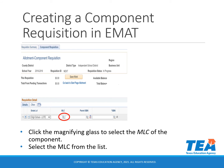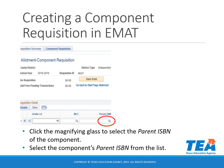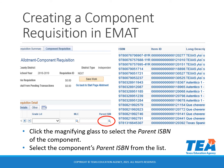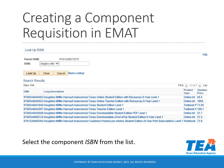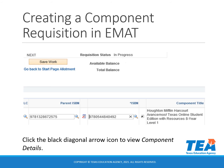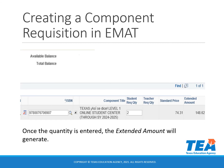Click the magnifying glass to select the MLC of the component. Select the MLC from the list. Click the magnifying glass to select the parent ISBN of the component — this is the program that contains the component you want to order. Select the component's parent ISBN from the list. Select the component ISBN from the list. Click the black diagonal arrow icon to view component details. Enter the quantity needed in either the Student Requisition Quantity field or the Teacher Requisition Quantity field. Once the quantity is entered, the extended amount will generate.